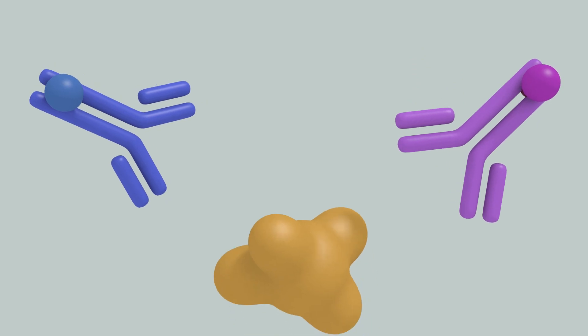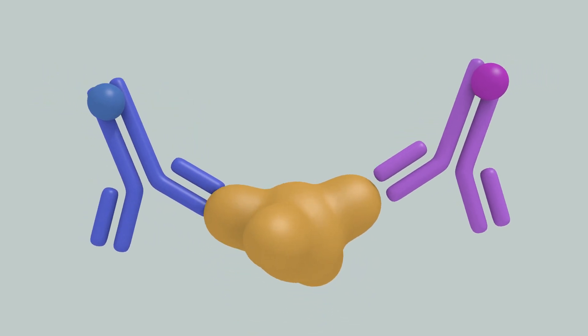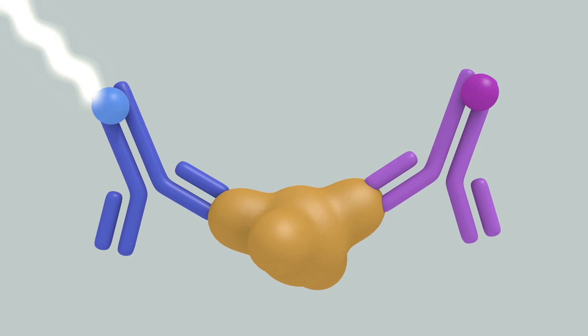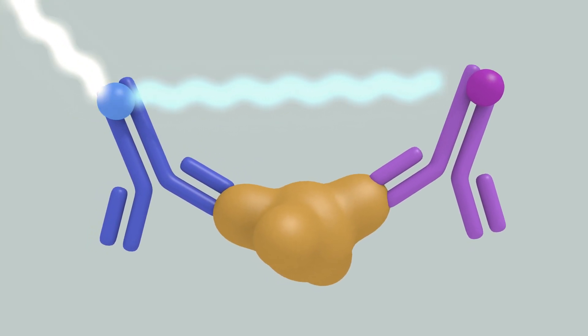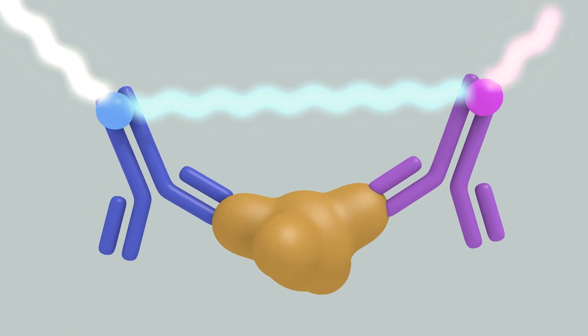The secreted protein is sandwiched between the two antibodies. When the donor absorbs light, it can emit fluorescence. If a nearby acceptor is present, this energy is transferred, giving specific acceptor fluorescence.